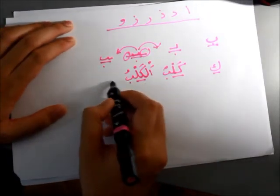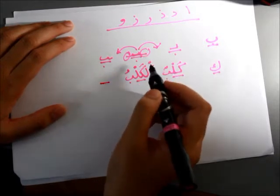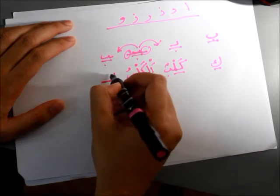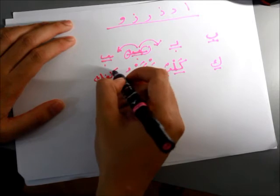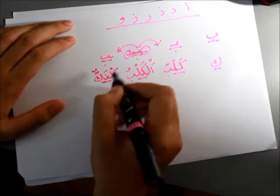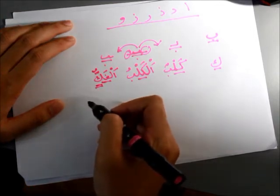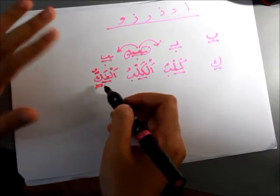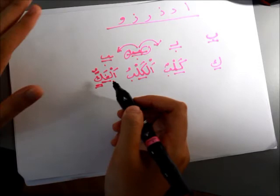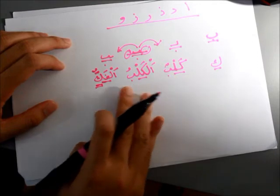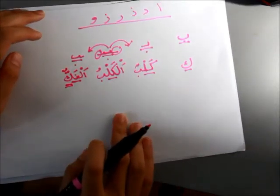If the Kaf is at the end, for instance in Al-Fakku — this is how Kaf is written at the end. Al-Fakku means 'to separate.' In the Quran, Allah SWT says 'Fakku Raqabah.' So there you have Al-Fakku — that is how Kaf appears at the end of a word.